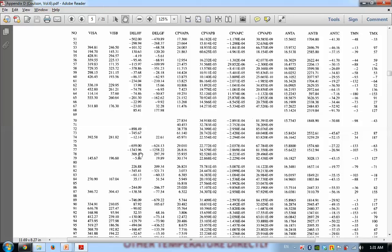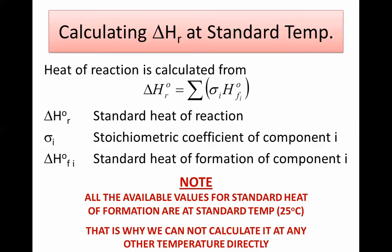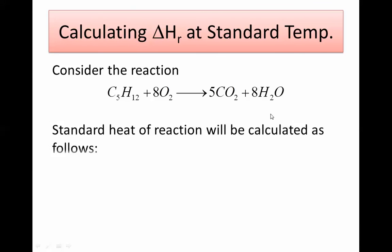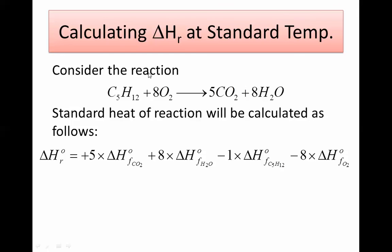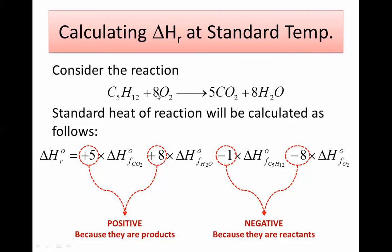Here is an example: the oxidation of pentane, which produces carbon dioxide and water vapor. To calculate the heat of reaction at 25°C, we take positive coefficients for products: +5 for CO₂ and +8 for H₂O, each multiplied by their respective heats of formation, then subtract the reactants with coefficients −1 for pentane and −8 for oxygen, multiplied by their heats of formation.